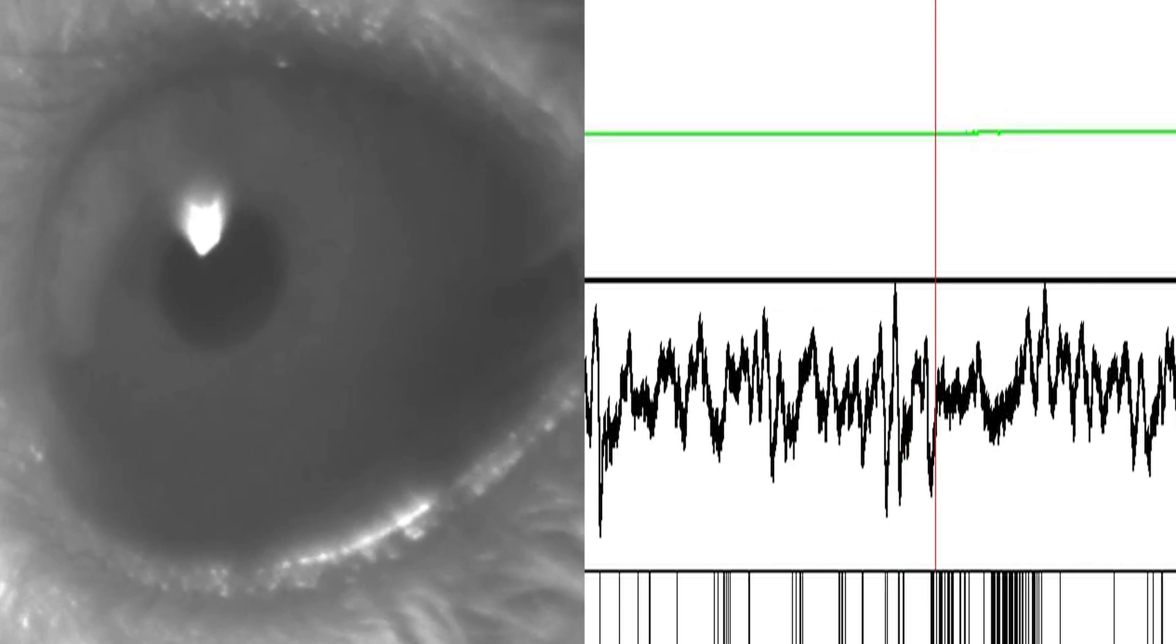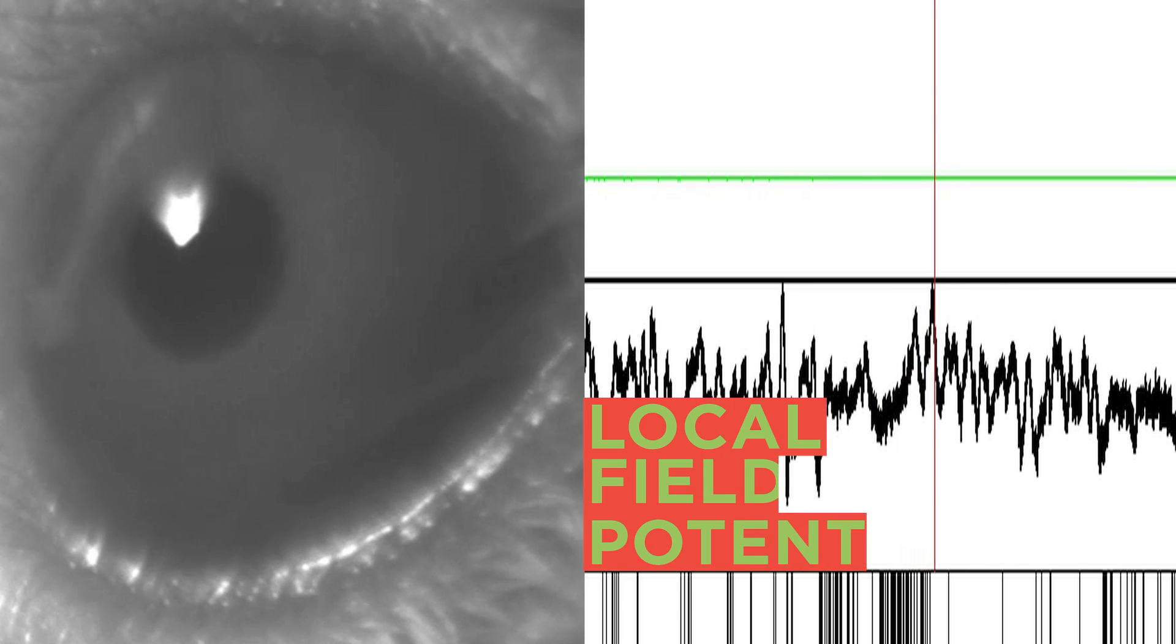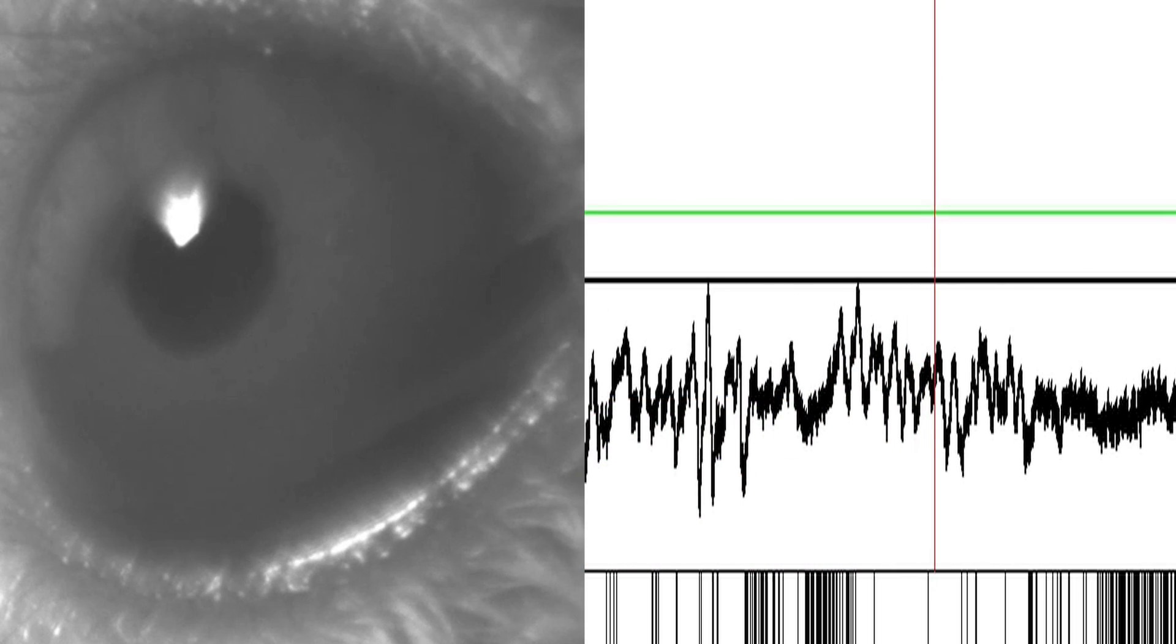When the mouse is not moving, you see large amplitude, slow fluctuations in the local field potential. Also the pupil is constricted.